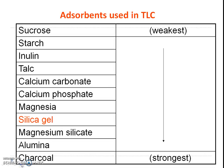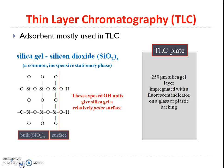If we look at what adsorbents are used in thin layer chromatography: silica gel is widely used. Other choices include starch, alumina, calcium carbonate, magnesia, and alumina.